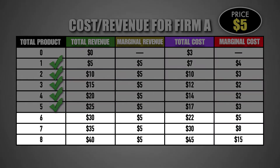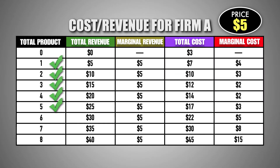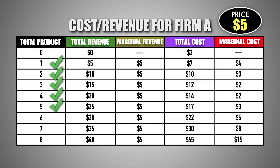In essence, the sixth unit of good M is the last unit that this firm can produce before marginal cost becomes greater than marginal revenue, signaling to the firm that it's time to stop production in order to avoid detracting from profits. The marginal revenue and marginal cost of the seventh and eighth units each show a marginal cost that is greater than marginal revenue. Producing these units would be detrimental to the firm's goals of maximizing profits, since each unit would bring in revenue that is insufficient to cover the cost paid by the firm to produce it. As a result, this firm can maximize its profits by producing six units of good M.